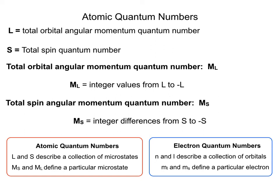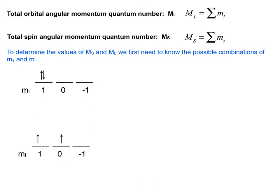Capital L and capital S describe a collection of microstates — a group of degenerate electronic configurations. Capital M_S and capital M_L define a particular microstate within that set.